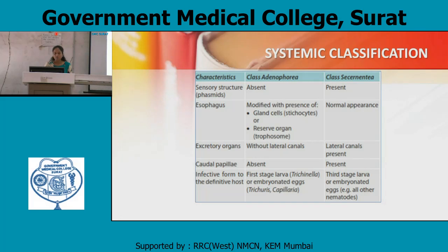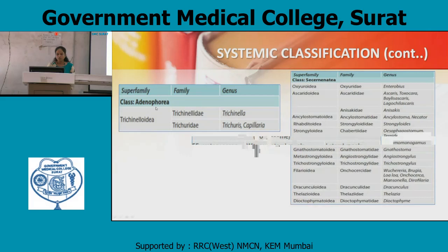Caudal papilla in Class Adenophoria is absent; in Class Secernatea it is present. The infective form to the definitive host in Class Adenophoria is the first-stage larva — Trichinella — or embryonated eggs in Trichuris and Capillaria. In Class Secernatea the infective form is third-stage larva or embryonated eggs. Examples include all other nematodes. Super family under Adenophoria class includes Trichinelloidea.